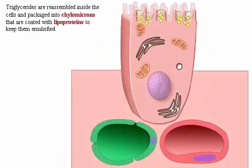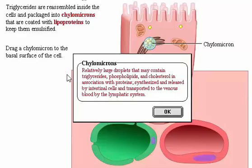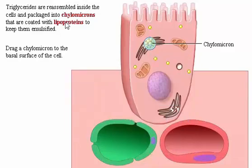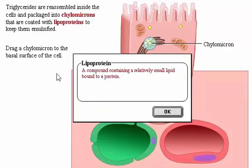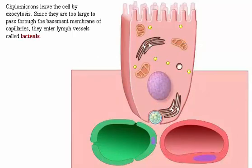Triglycerides are reassembled inside the cells and packaged into chylomicrons that are coated with lipoproteins to keep them emulsified. Chylomicrons leave the cell by exocytosis. Since they are too large to pass through the basement membrane of capillaries, they enter lymph vessels called lacteals.